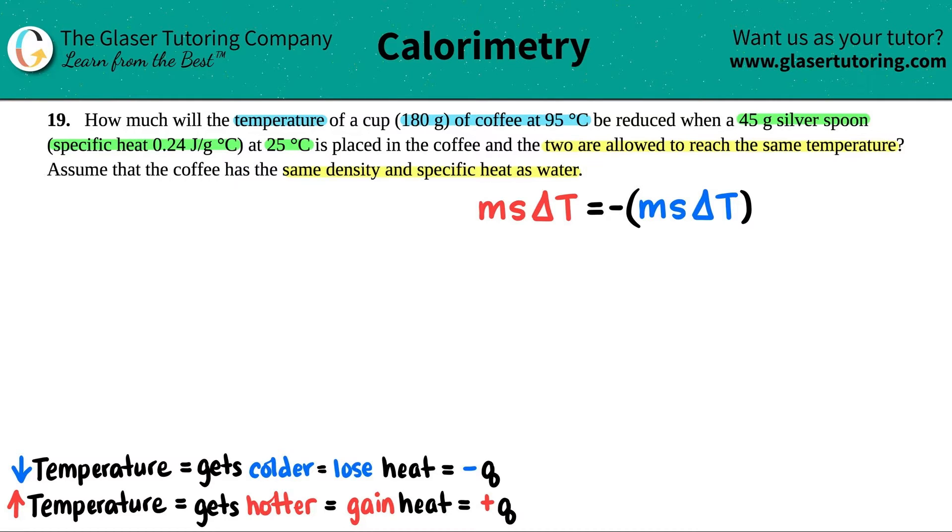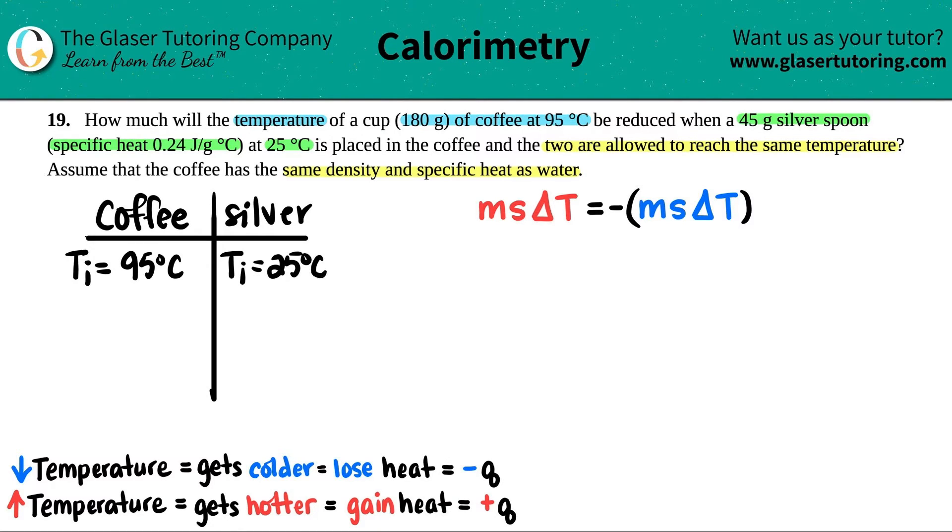So how I like to figure this out is I like to make a little chart. So I have coffee, and then I do like this little chart thing here, and I'll say that I have the silver spoon. I'll just put silver. Now, in order to find out which is going to be the blue side, aka the one that loses heat, and which is the red side, which one is gaining heat, we look at the temperatures.